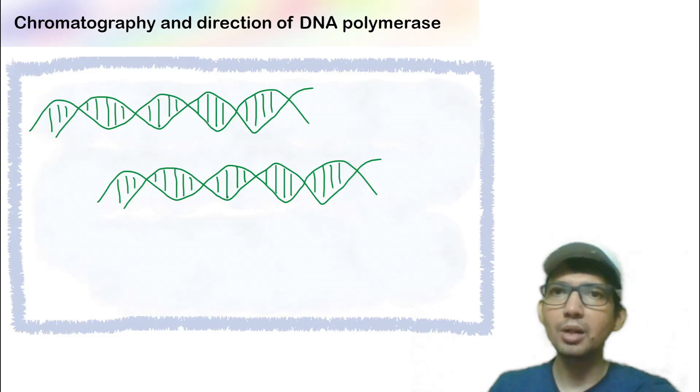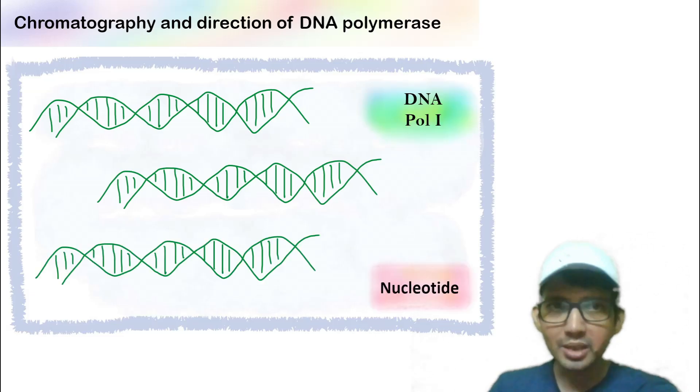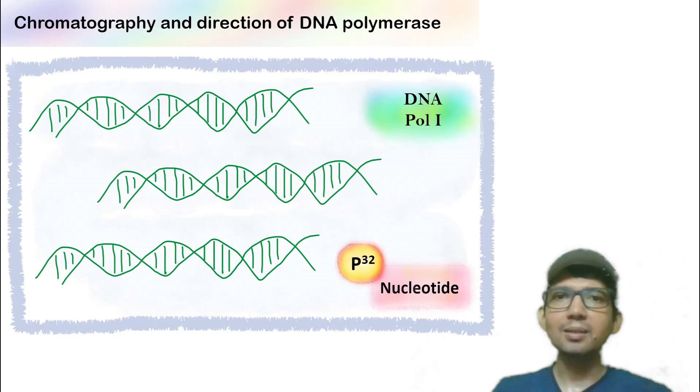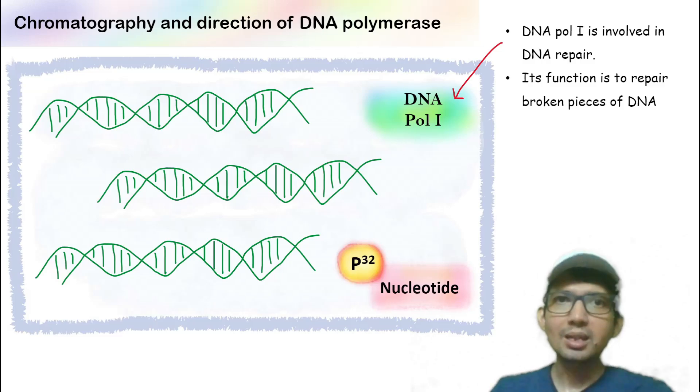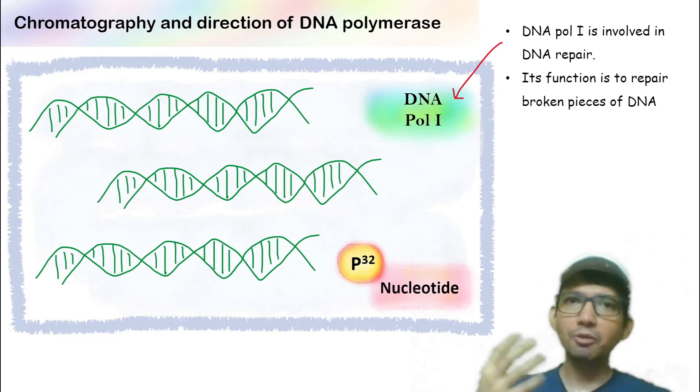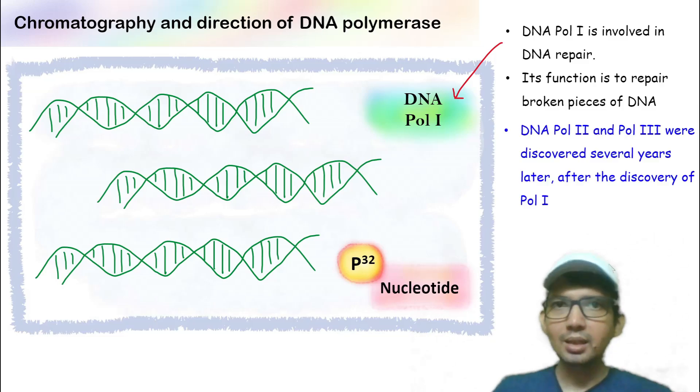He designed a brilliant experiment. He took DNA along with DNA polymerase 1 and P32 labeled nucleotide. Now remember, DNA polymerase 1 is the enzyme involved in DNA repair. Its function is to repair broken pieces of DNA. The other two polymerases, Pol 2 and Pol 3, were discovered several years later after the discovery of polymerase 1.